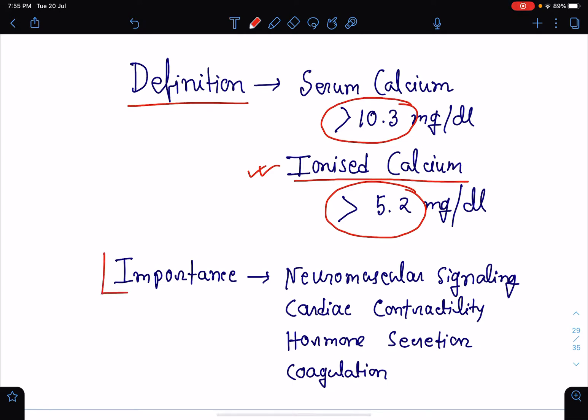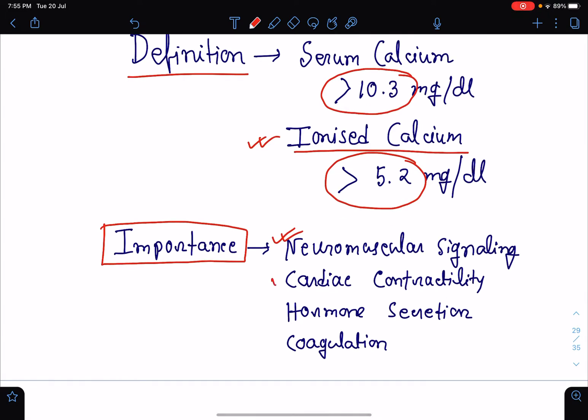What is the importance of calcium in our body? It is very much important for neuromuscular signaling, for cardiac contractility, secretion of various hormones and it is an important part of the blood coagulation.